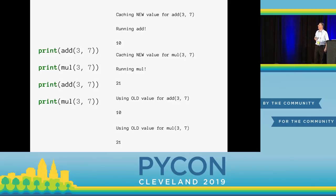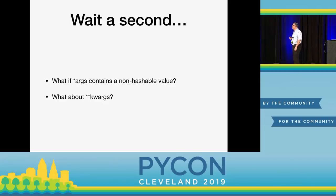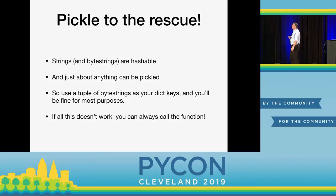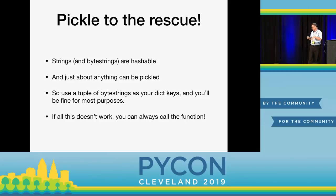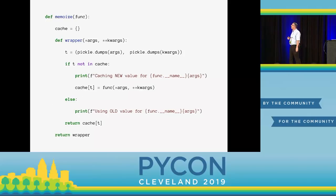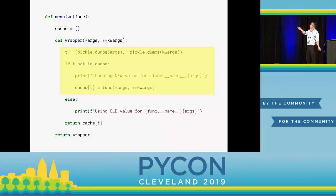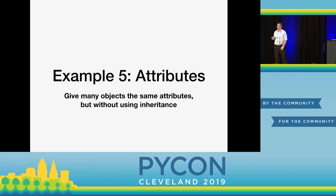But what if args contains a non-hashable value, and what about kwargs? Well, I could use pickle. Pickle takes a Python data structure and turns it into a byte string, and byte strings are hashable. So I pickle args, pickle kwargs, stick them into a tuple, and use that as my cache key. Now every unique combination of args and kwargs is being cached, and I always return the cached result.